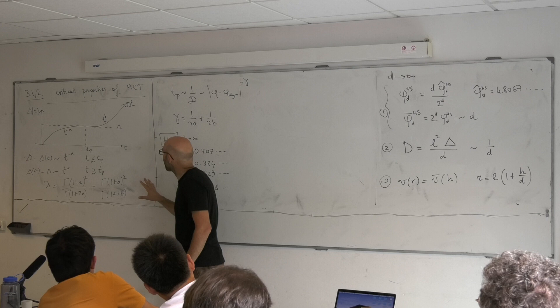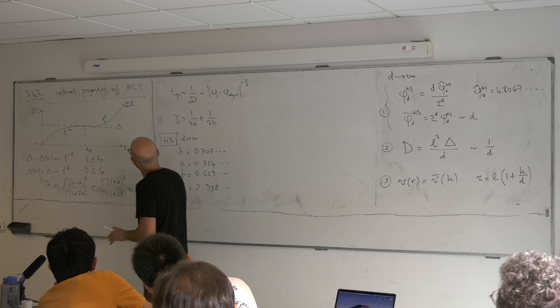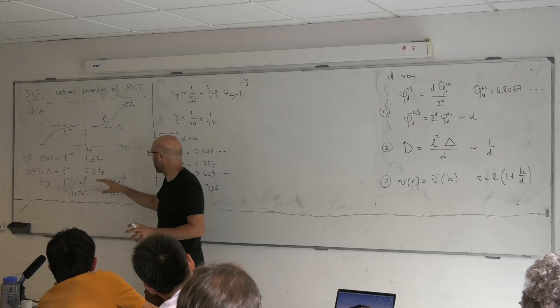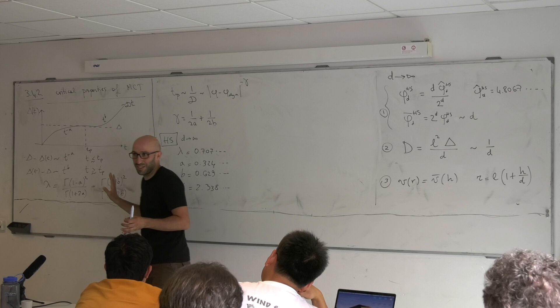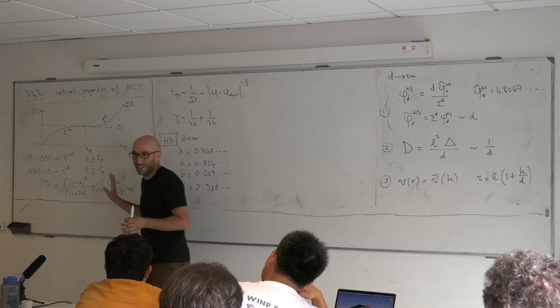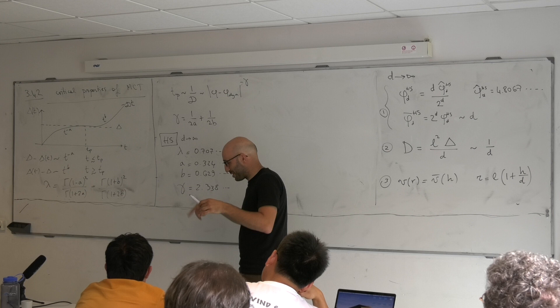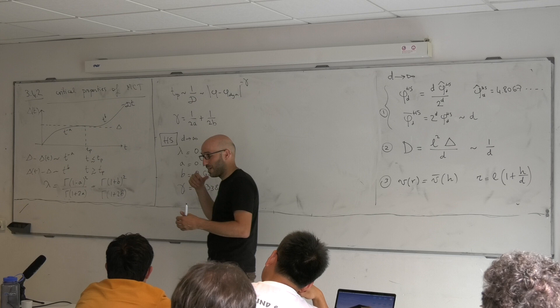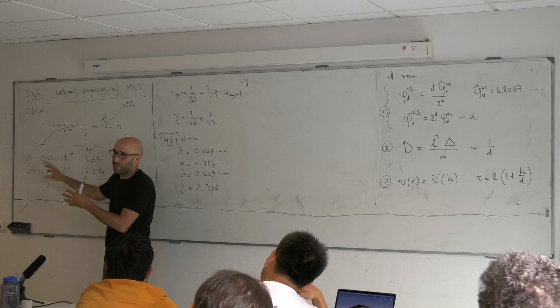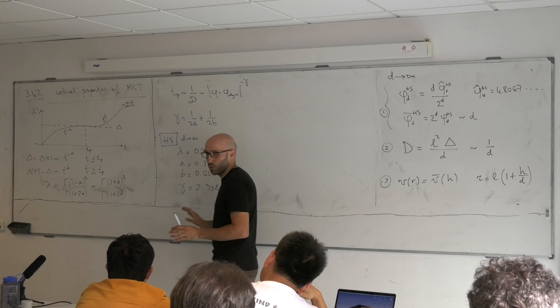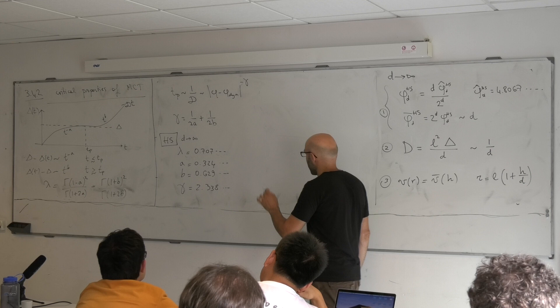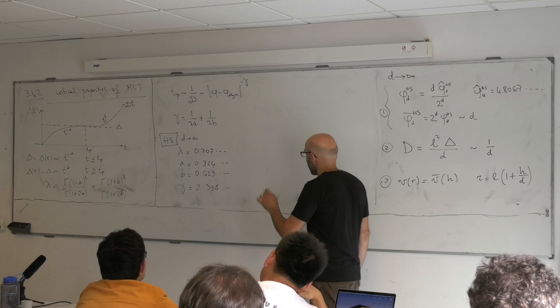Deriving these exponents directly from the equations is difficult; instead we used a mapping to replica equations to show that these exponents are written in terms of cumulants of replicas. MCT people can derive this from the mode-coupling or p-spin equations by asymptotic expansion around the plateau. The key point is that we can compute λ for any potential. For hard spheres in finite dimensions (3, 4, 5, 6), the value of γ is more or less consistent with this infinite-dimensional result.